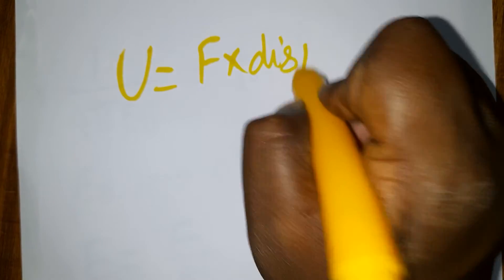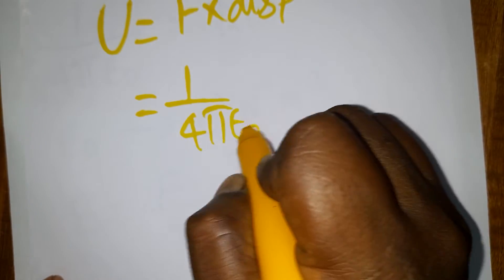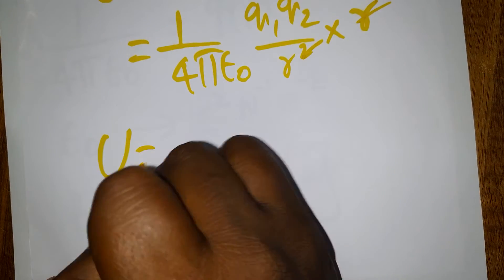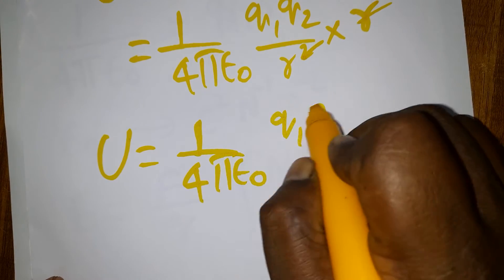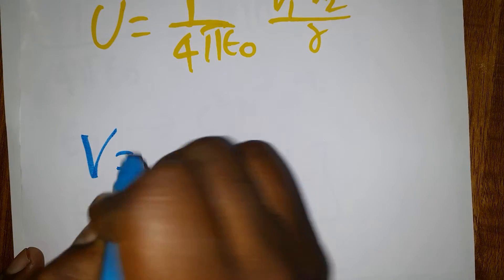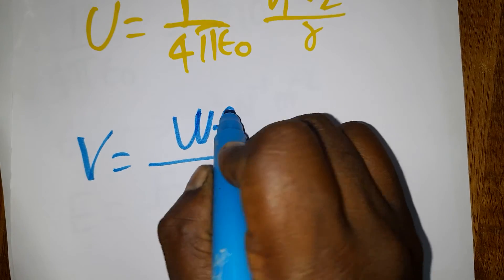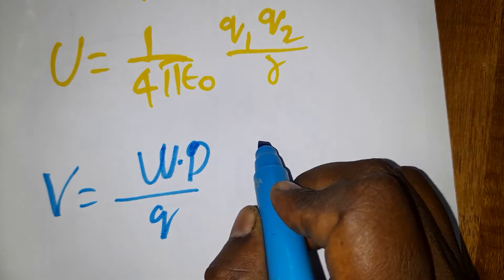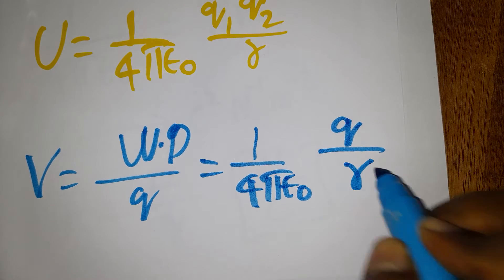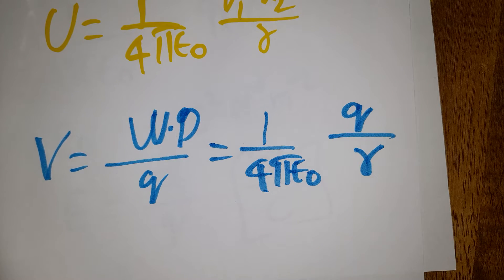For electrostatic potential energy: energy equals force into displacement. Since F = (1/4πε₀)(q1q2/r²) and displacement is r, the r² and r cancel to give U = (1/4πε₀)(q1q2/r). For voltage or potential, V equals work done per unit charge, which gives V = (1/4πε₀)(q/r).